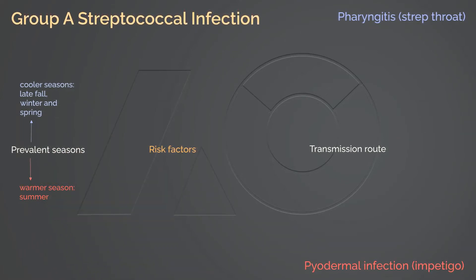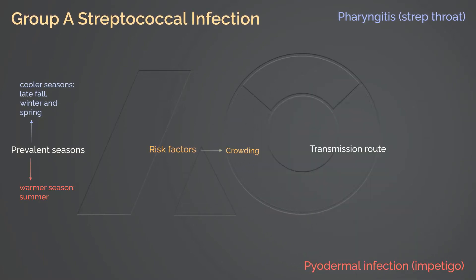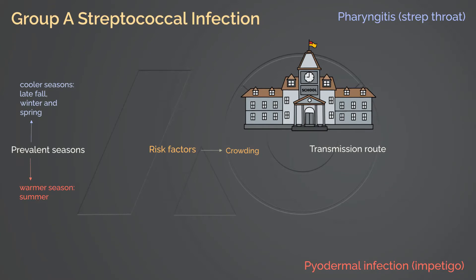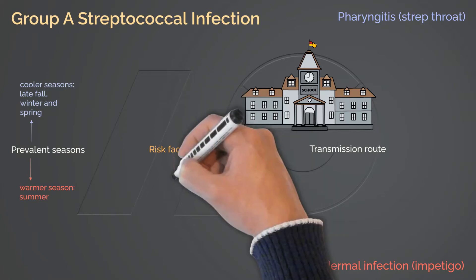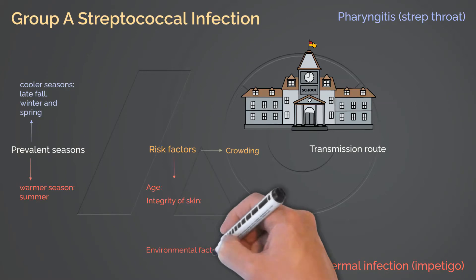The most significant risk factor for transmitting Streptococcus pyogenes is crowding, which increases opportunities for contact. Therefore, school settings put children at risk for infection because of high frequencies of close contact. Additional risk factors for Streptococcal pyodermal infection include age, compromised skin integrity, and environmental factors.